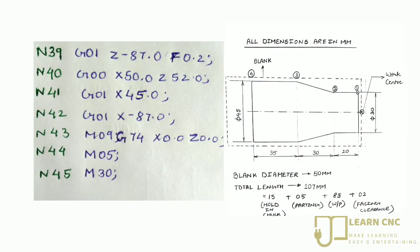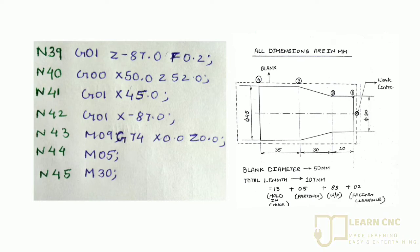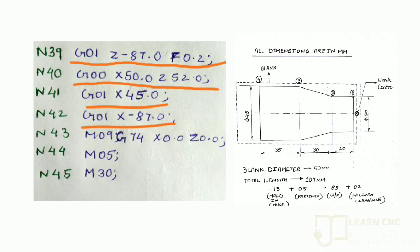After this taper is formed, we have to do the plain turning process by G00 X47. Then G01 Z minus 87 and F0.2. Then G00 50.0 and Z52, it will return where the taper has finished. Then again G01 45.0 and G01 Z minus 87. So the plain turning process is finished.